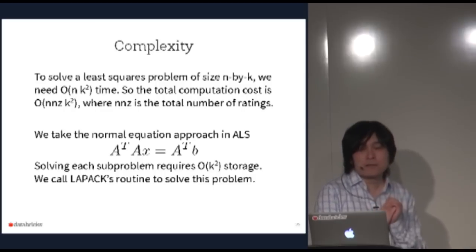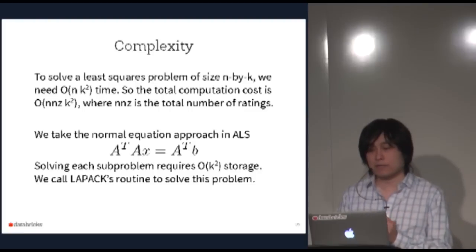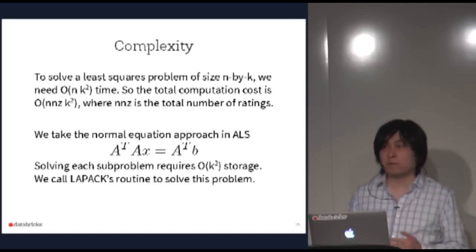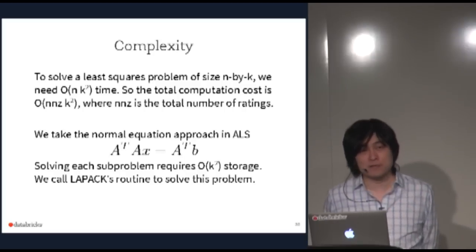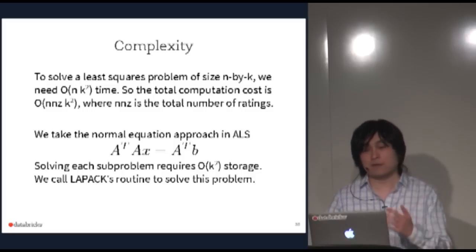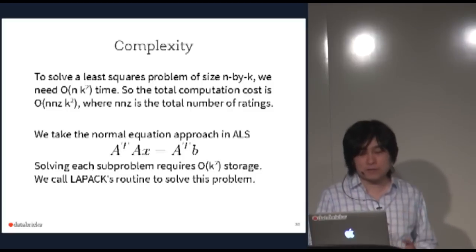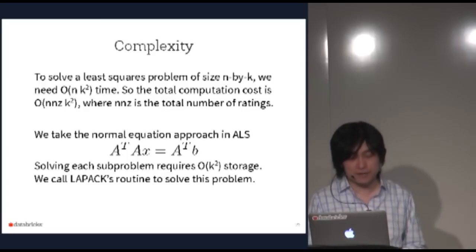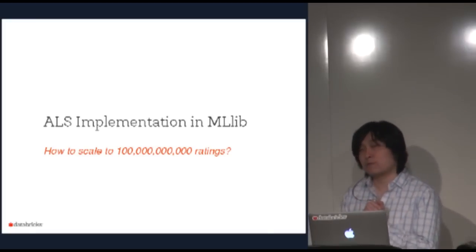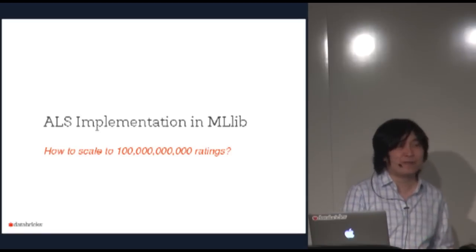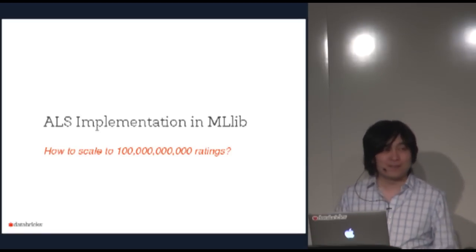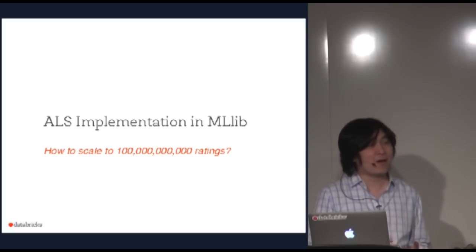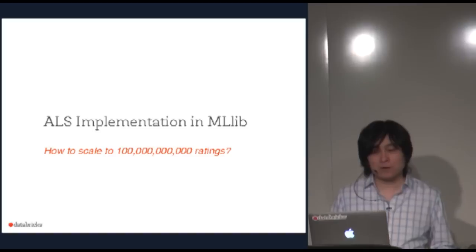For Spark, we need to think about how to implement and scale this algorithm. In version 1.1 we had a good implementation scaling to a few billion ratings. But users asked for more, so I spent time thinking about how to reach 100 billion ratings. The key challenge is always communication. With millions of users and items, we have to distribute ratings across machines — the question is how.